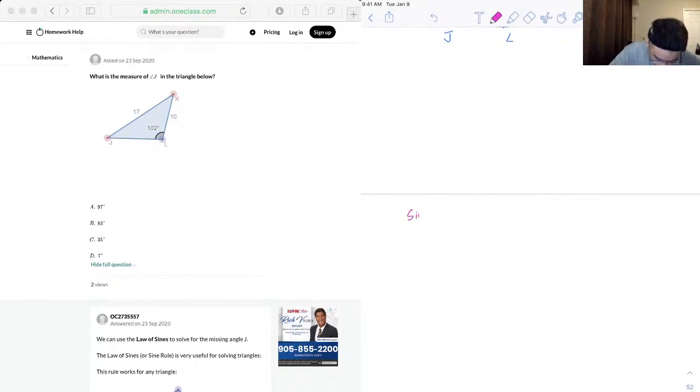Put it in here, so sine law. Okay, so the formula is given by a over sine A is equal to b over sine B is equal to c over sine C. All right, where a, b, c are the sides and capital A, B, and C are the angles.